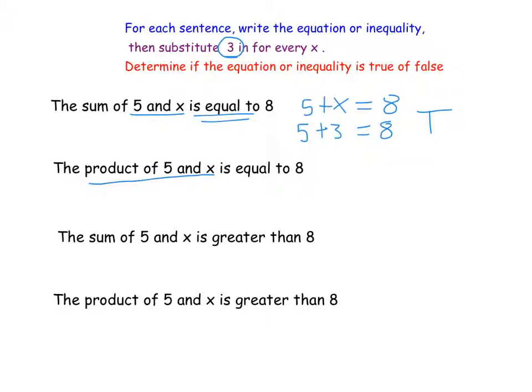Product of five and x. So the product, you remember, means multiplication. So five x is equal to eight. So once we plug in three, five times three equals eight. Five times three is 15, not eight. So when we plug three in or substitute three in for that equation, it makes a false statement.